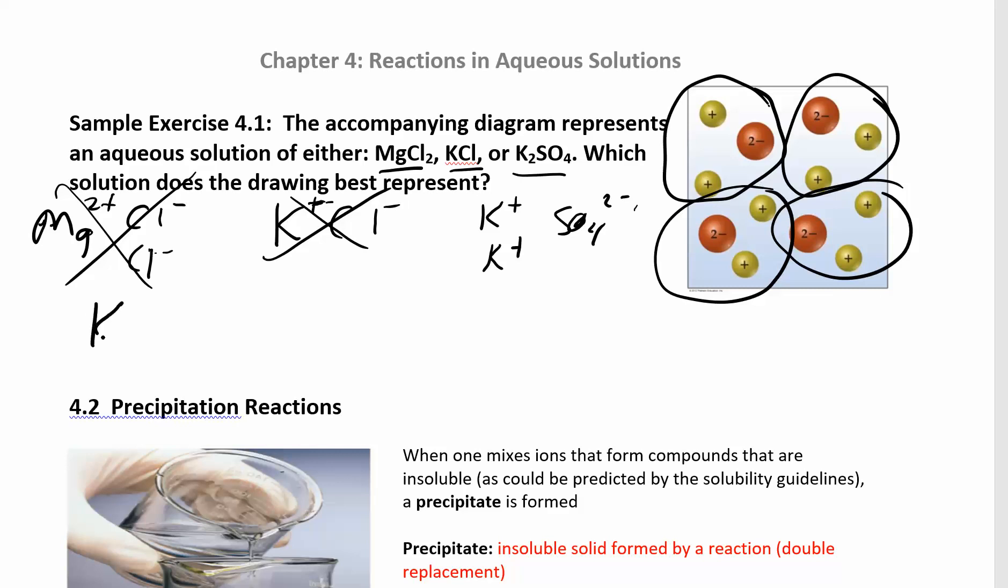If you think about what's happening here, I have K2SO4. I'm going to put that in water and it's going to split up into two potassium ions and one sulfate ion.